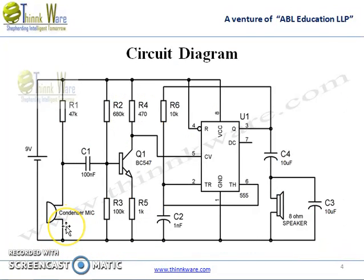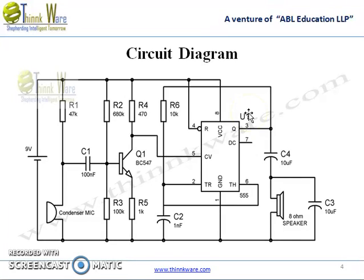Here is the condenser mic on which we speak, and that sound is converted to an electric signal by the transistor. This electric signal is fed to pin 5 of the 555 IC. The output pulse at pin 3 is modulated, and the speaker detects this DC component of the output pulse and produces sound. Basically, when there is a voltage at pin 5, the width of the output pulse increases for a moment, and that is detected by the speaker.